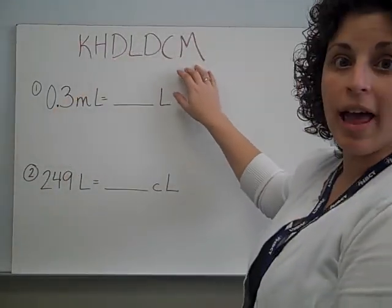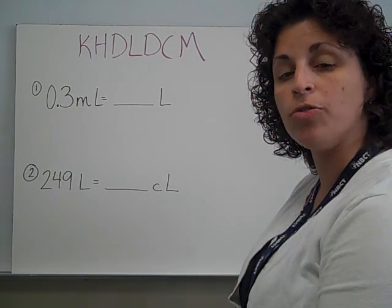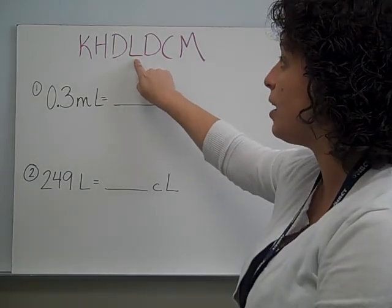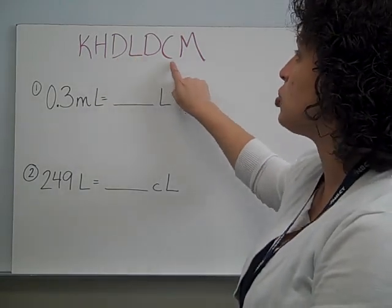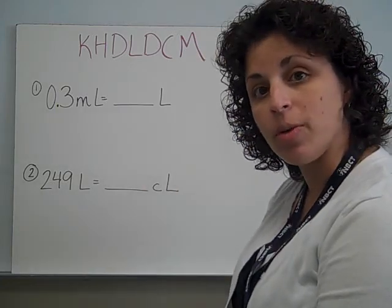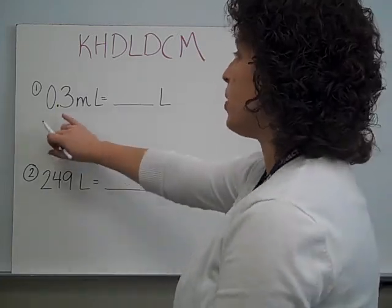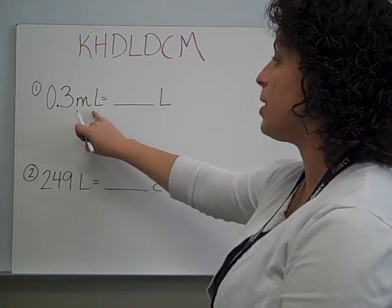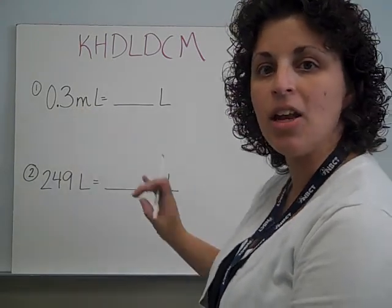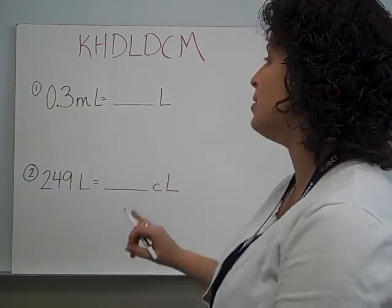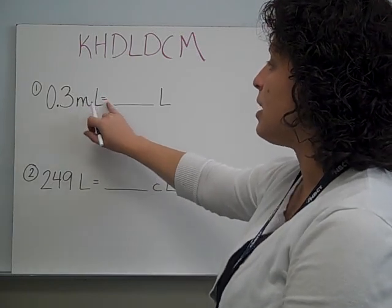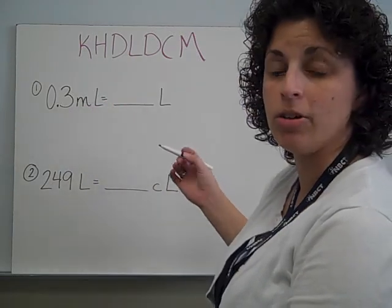We're going to use our letters — the first letter of each word from our phrase, King Henry's daughter loves delicious chocolate milk — to help us find our equivalents, just like we've done before. So this one: I have 0.3 milliliters, and yes, that L is capital — it always is. Zero and three-tenths milliliters equals how many liters?